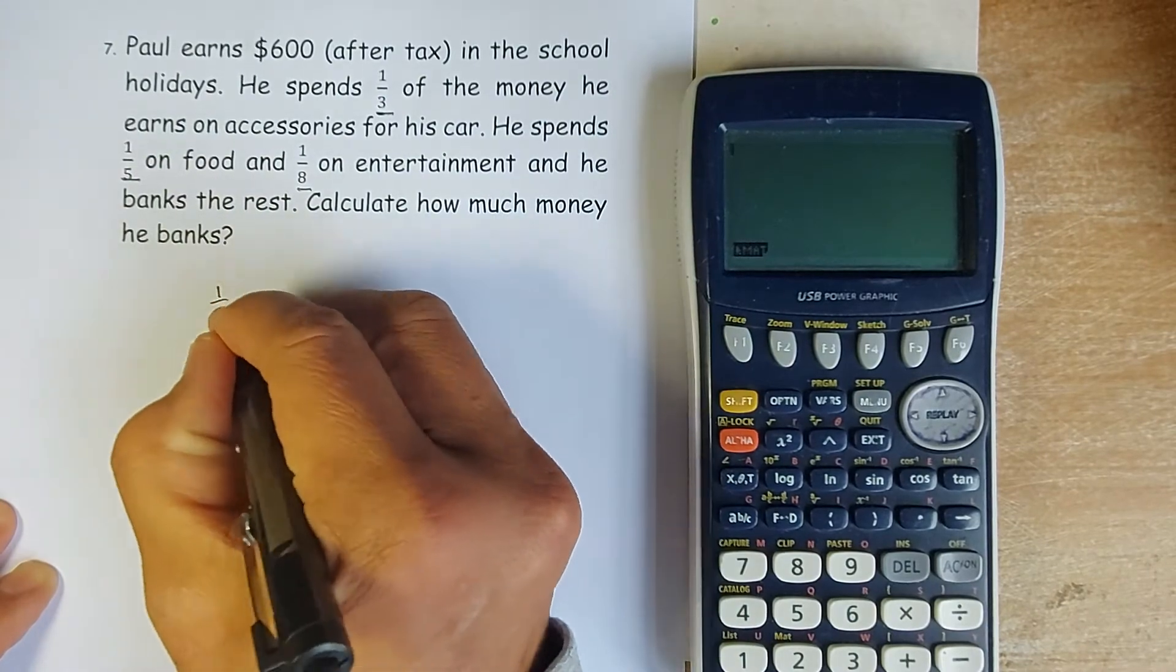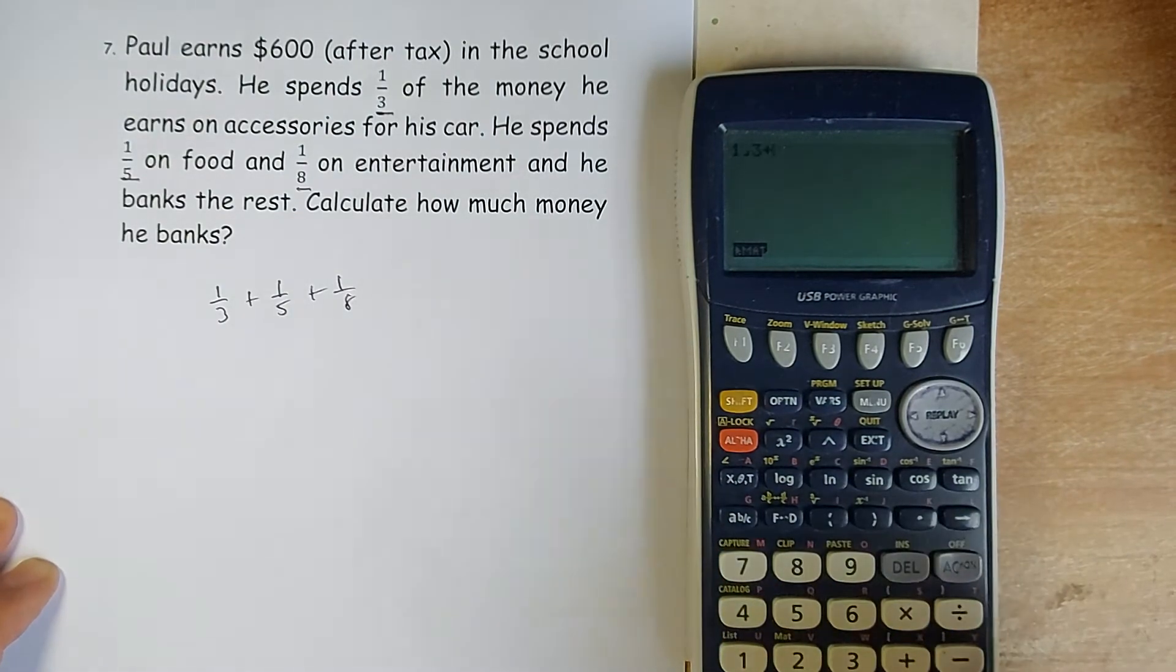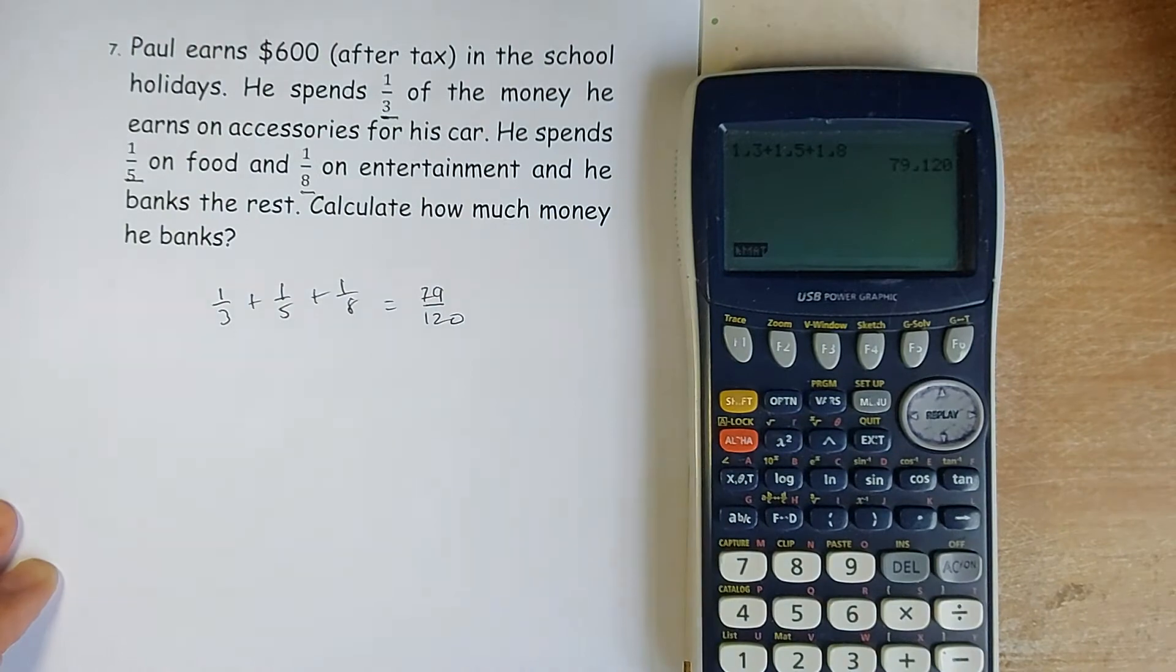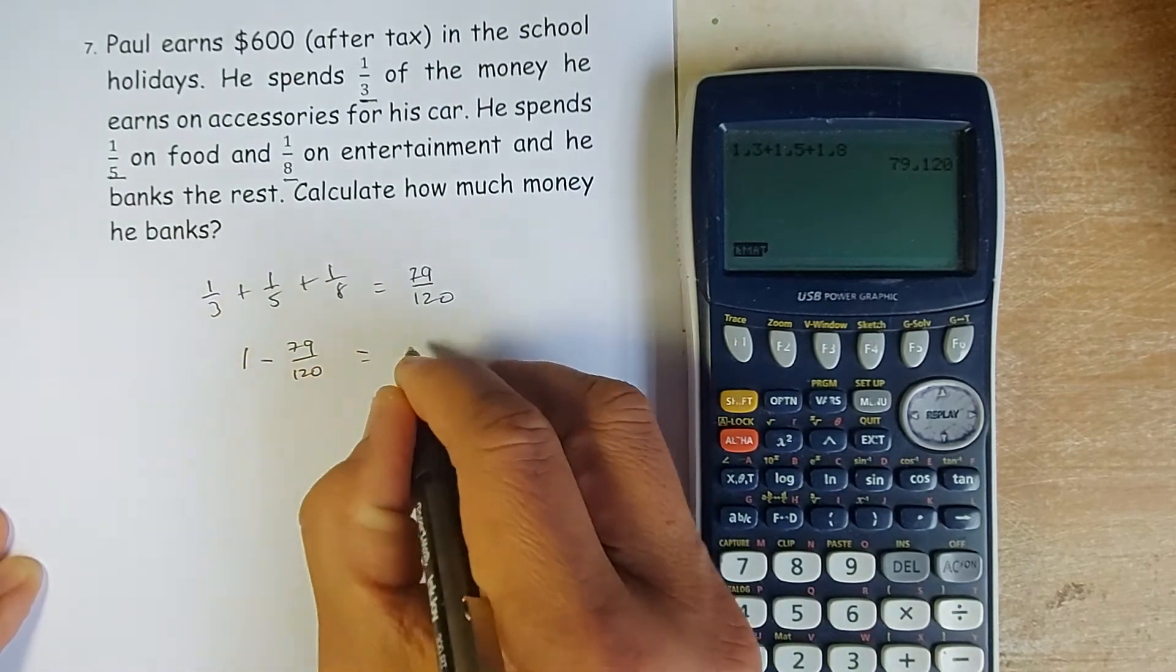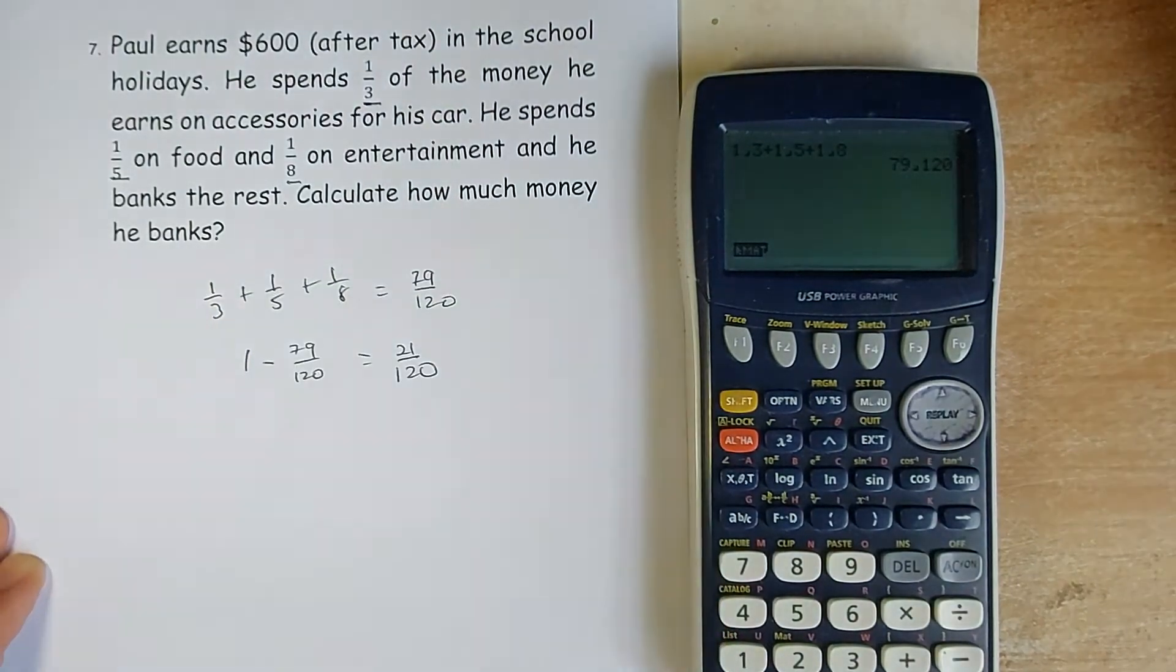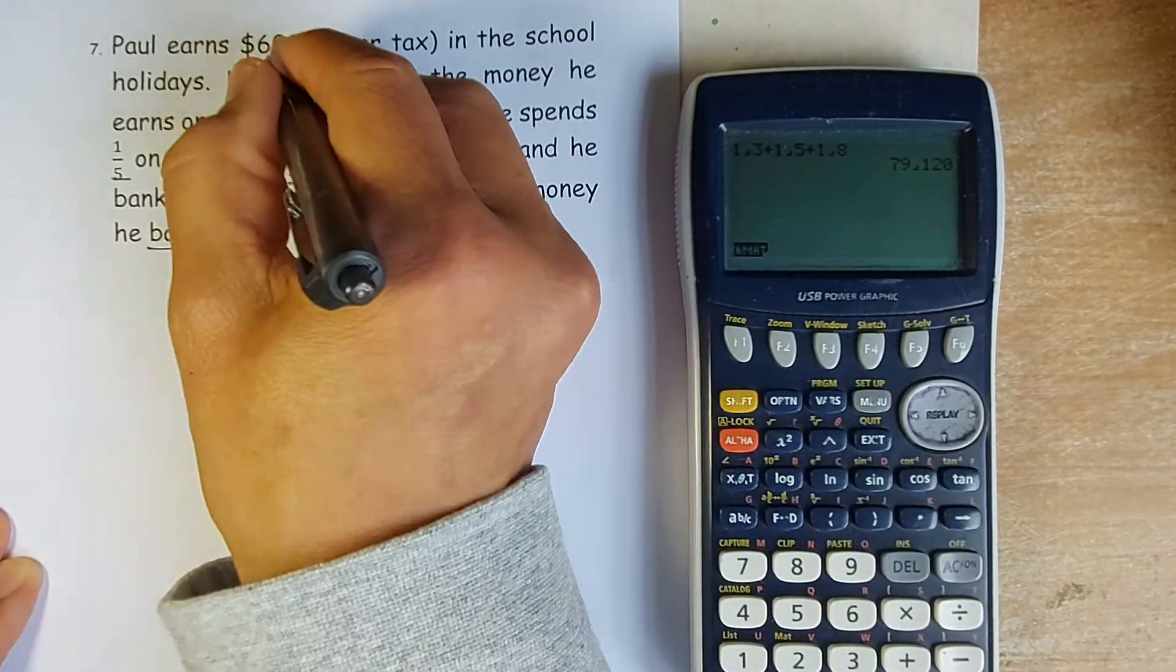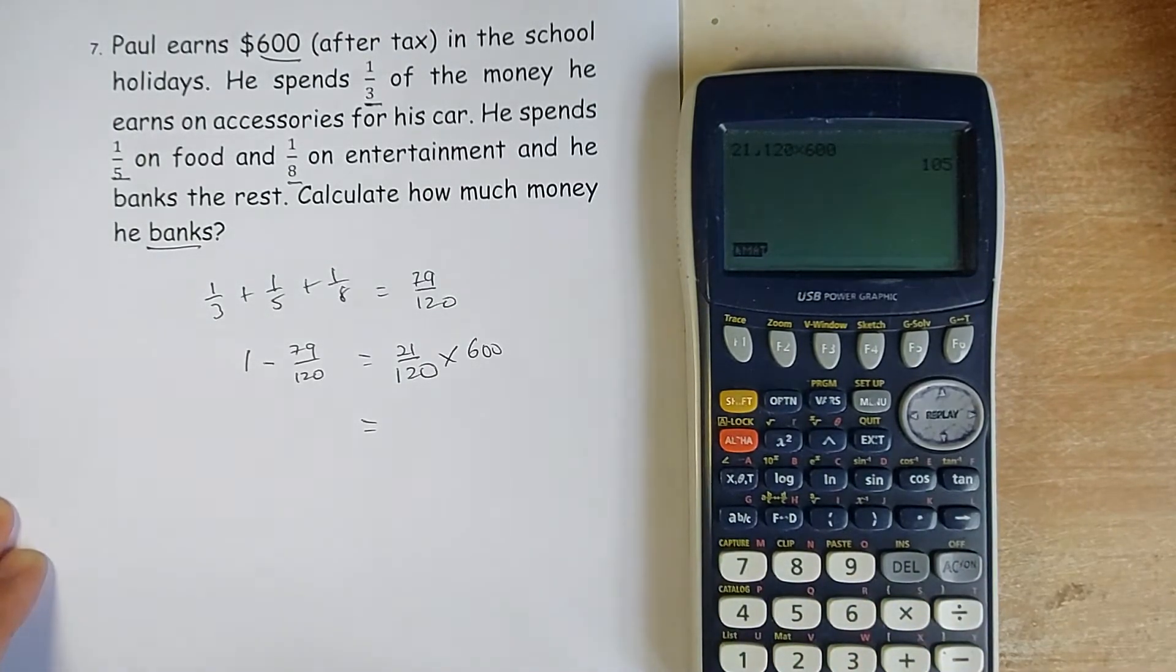So 1 third plus 1 fifth plus 1 eighth. Use the calculator. 1 third plus 1 fifth plus 1 eighth, and that will come up to 79 over 120. So if he banks the rest, so the full is 1 minus 79 over 120, so he will bank 41 over 120. So to get the amount he banks, you need to multiply that with 600, because initially he earned 600. Put in the calculator. So 41 out of 120 multiply by 600.